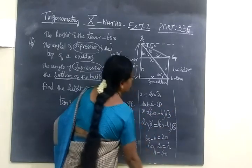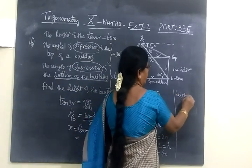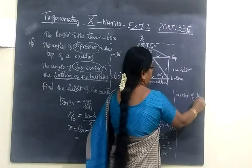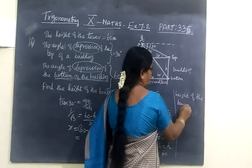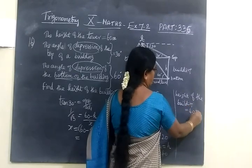Equal to 40. So the final answer, height of the building equal to 40 meters. Height of the building equal to 40 meters.